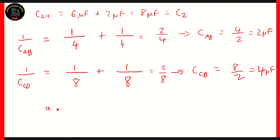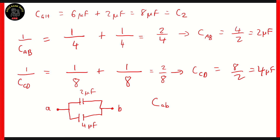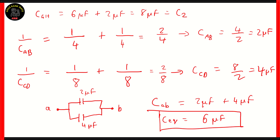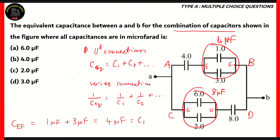So, right now, between the points lowercase a and lowercase b, we have two capacitances in parallel. One of them measures 2 microfarad, and the other measures 4 microfarad. So, if you need to find out the capacitance across lowercase a and b, you just need to add the two together. 2 microfarad plus 4 microfarad gives you a total of 6 microfarad. So, the C equivalent across lowercase a and lowercase b is option A, 6 microfarad.